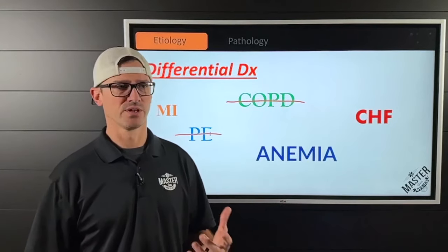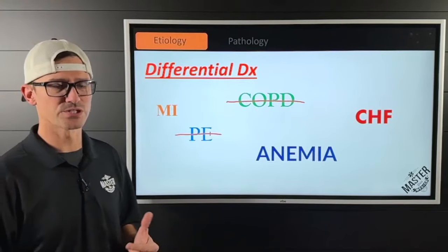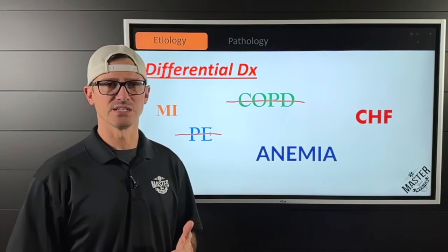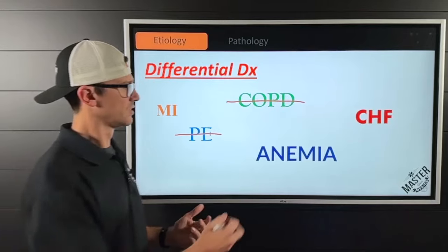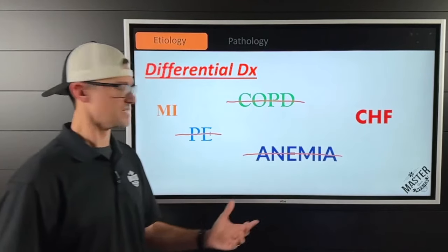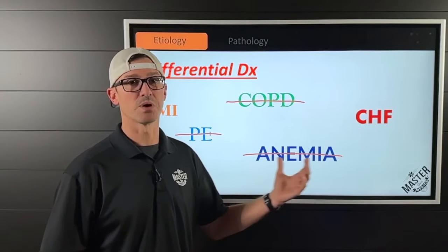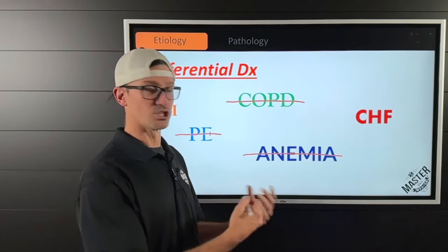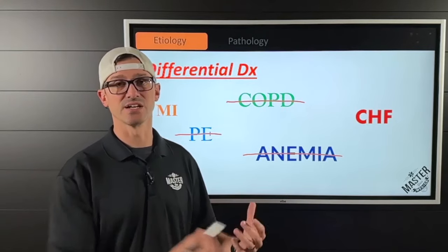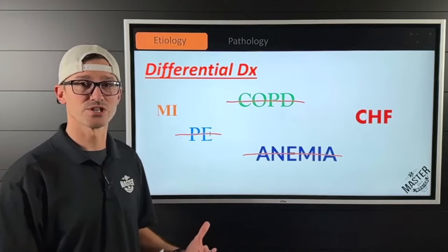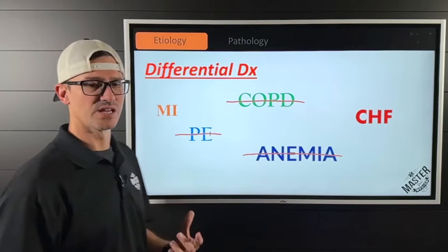Maybe it's anemia — not enough hemoglobin to transport oxygen — but we have no known history and no suspicion of blood loss or lack of blood cells, so we're ruling that out. Also in anemia, the patient may not necessarily be hypoxic; you could get a false positive on the pulse ox showing 100% saturation, but with low concentration of oxygen-carrying cells throughout the bloodstream, actual oxygen delivery is low. So we're left with MI and CHF.